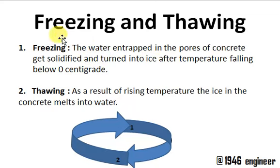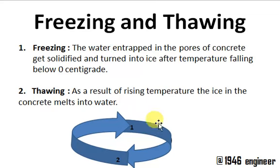So this process is called freezing. To repeat: a concrete block has pore spaces; when subjected to water those pores get occupied, and when temperatures fall below zero degrees centigrade in winter, that water turns into ice — that is freezing. This is the freezing part of the cycle and it happens in winter.